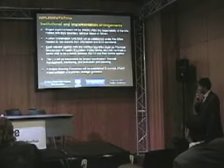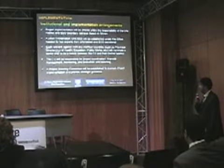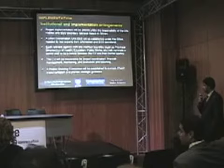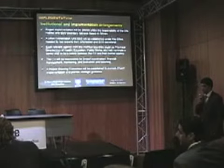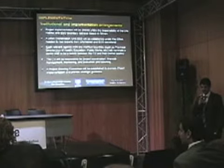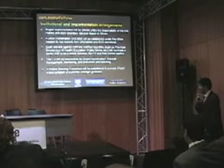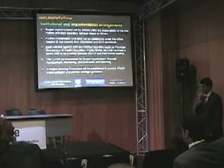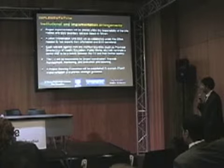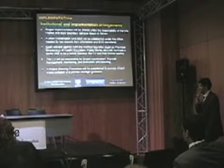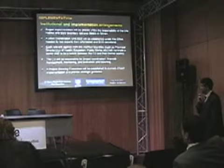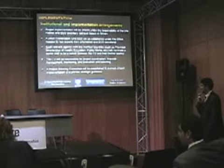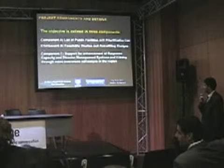The implementation will be the responsibility of UN Habitat and the ECO Secretariat. A project coordination unit will be established under this cooperation, and each relevant agency from the member countries will provide a key liaison person between the coordination unit and their home agency. The coordination unit will be responsible for project coordination, financial management, monitoring, evaluation, and reporting.